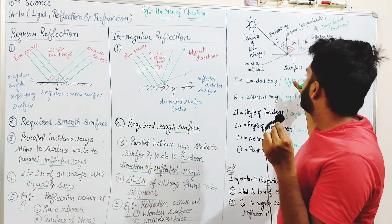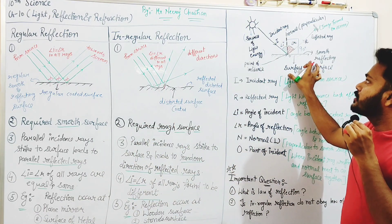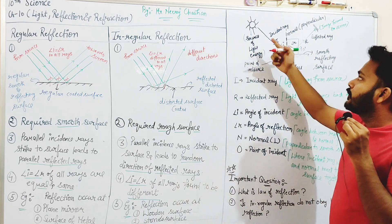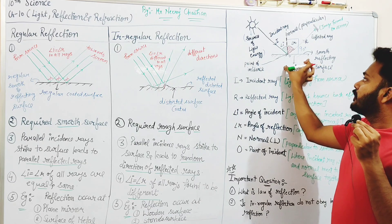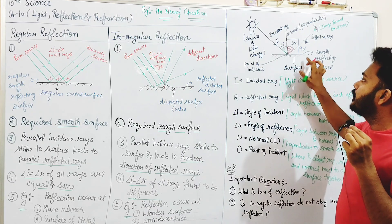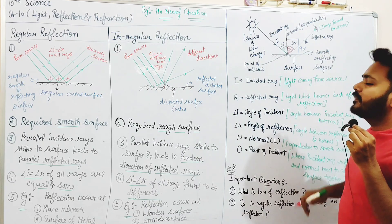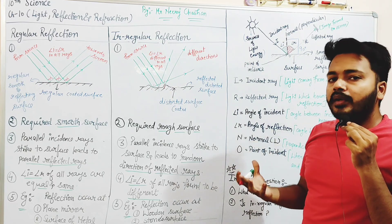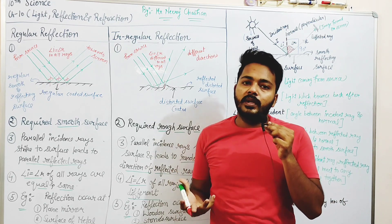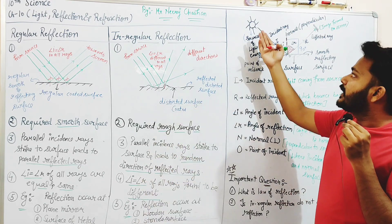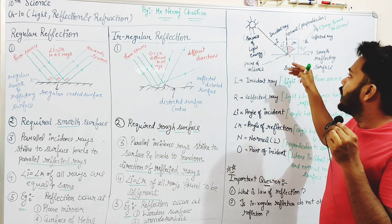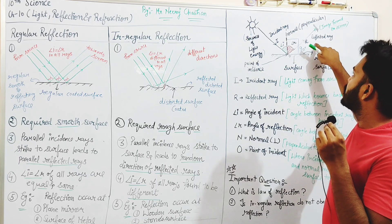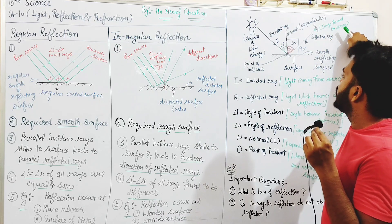This is the diagram of Reflection of Light. I have drawn a light coming from a source. This is the surface — the dotted one is the reflecting surface. For reflection, a reflecting surface is very much required. When the light coming from this source strikes at this point, it returns back in this direction, falling on a screen and making an image.